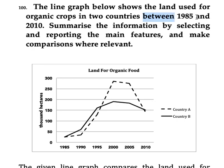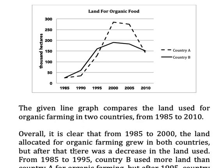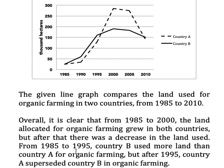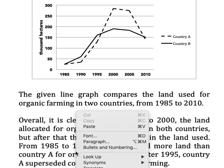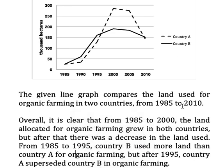I made the introductory statement by putting synonyms for one or two words and writing 'given' instead of 'below.' Next, the overview comes. The overview is the gist of the graph, and I suggest students not to put any data in it — though years can be included. The overview paragraph starts with the word 'overall.'